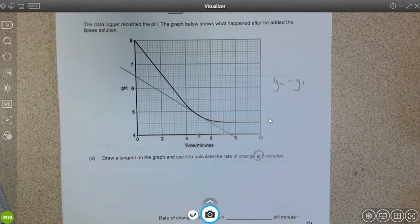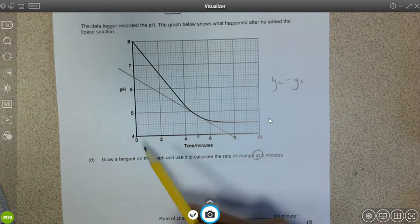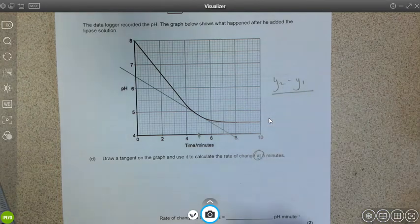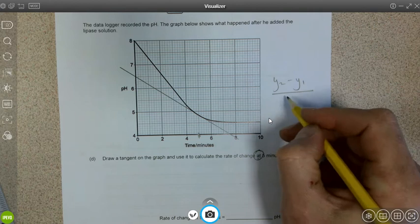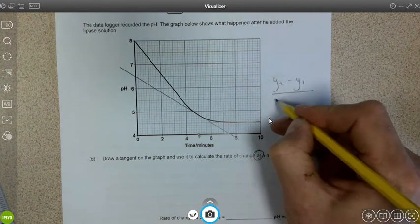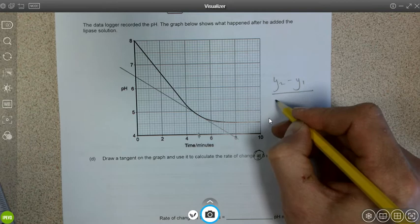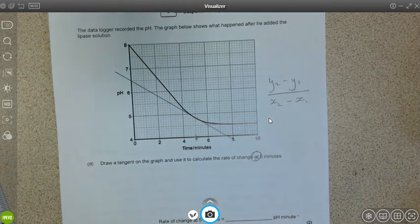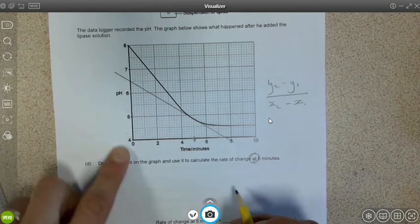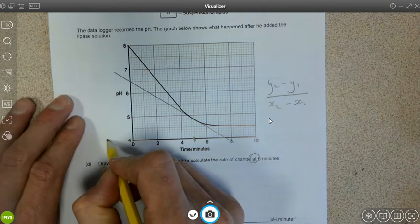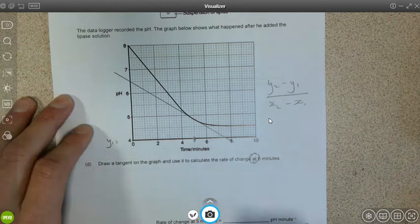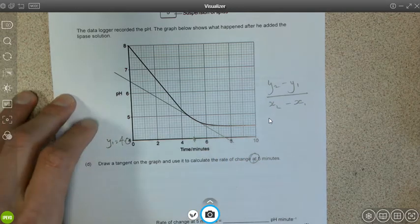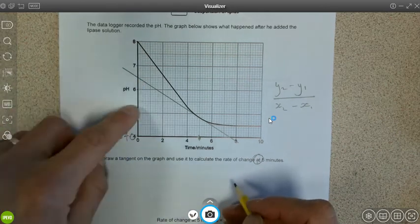Right the way across the axes again, and we start following that same method. So y2 minus y1, so the final pH minus the initial pH, and then the final time x2 minus x1. If we have a look at the graph then, our y1 in this example, well that's four because we've gone right down to the axis there, and y2 is 6.5.